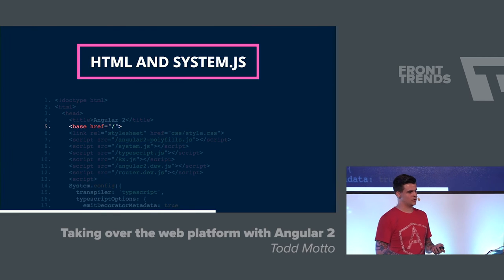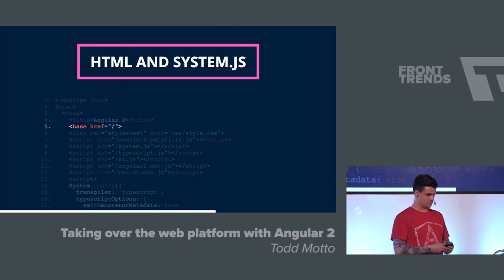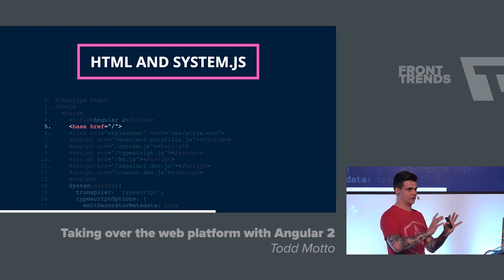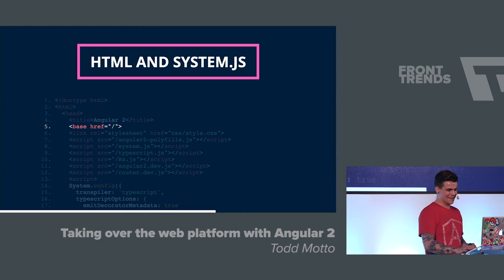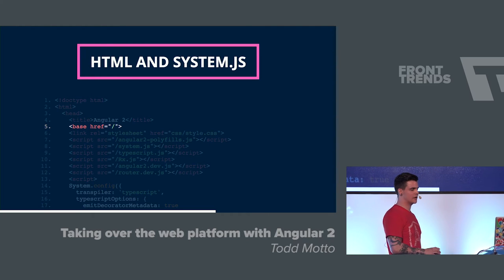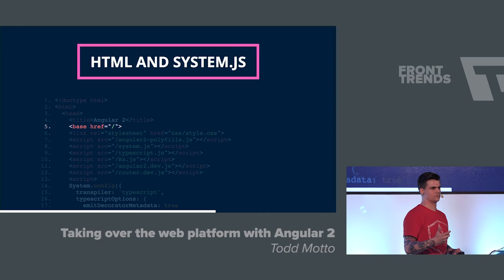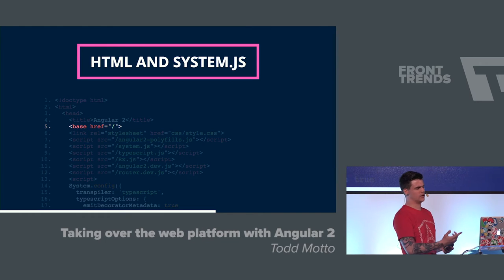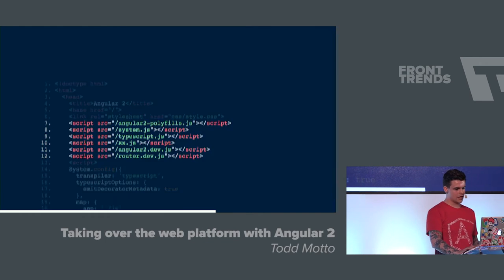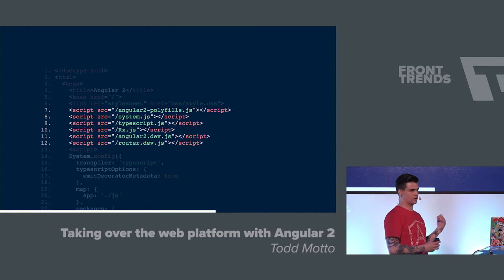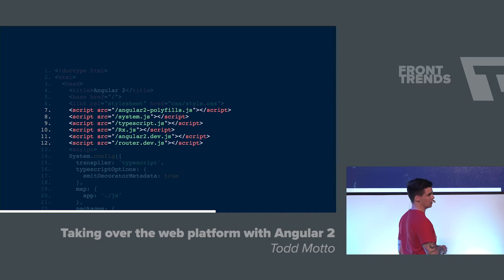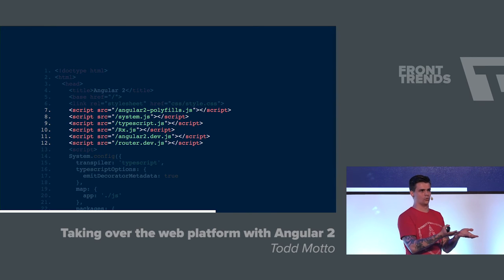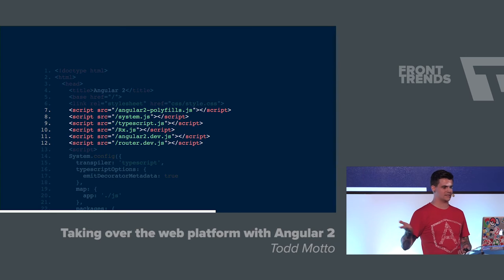The first thing we do when we bootstrap an Angular app — to set up an Angular app using the router, we need a base ref element, set to forward slash. Then we need Angular 2, polyfills, system.js, TypeScript.js — you wouldn't do this in production, but you can in development. It lets you compile TypeScript in the browser, which is handy for quick demos. Then RxJS for observable streams, Angular 2 dev, and the router dev. You could include them all, or get system.js to load them.